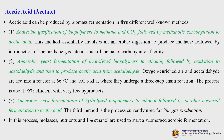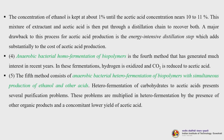The third process is anaerobic yeast fermentation of hydrolyzed biopolymers to ethanol followed by aerobic bacterial fermentation to acetic acid — both aerobic and anaerobic processes are used. This is currently used for vinegar production. In this process, molasses, nutrients and 1% ethanol are used to start a submerged aerobic fermentation. The concentration of ethanol is kept at about 1% until the acetic acid concentration nears 10 to 11%. This mixture of extractant and acetic acid is then put through a distillation chain to recover both. A major drawback is the energy-intensive distillation step, which adds substantially to the cost.